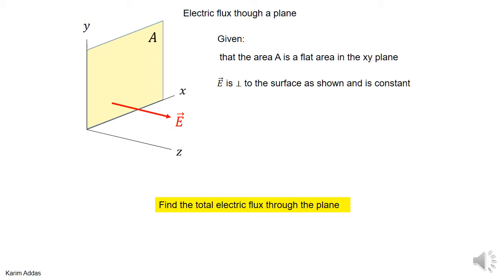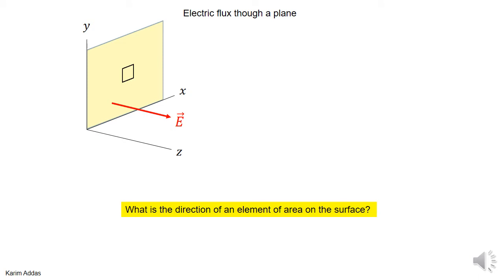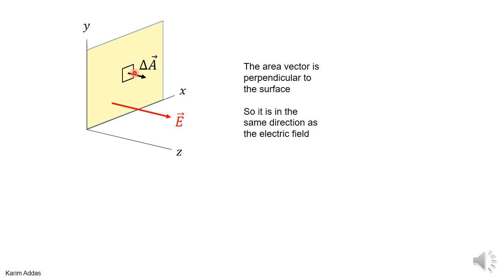First, let's make a small element of area on the plane. What direction would you assign the area vector for this element? Since this is an open surface, there is some ambiguity — should you make it point in the positive z direction or the negative z direction? You have complete freedom to choose either, so I'm going to choose to make the area element point in the same direction as the electric field.